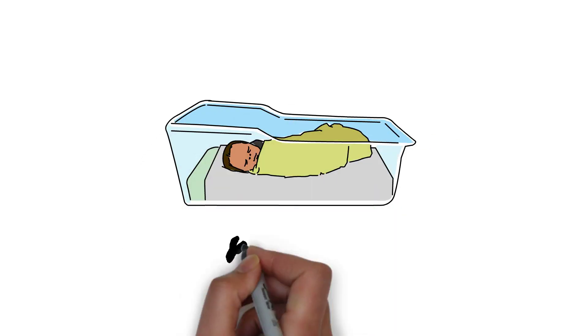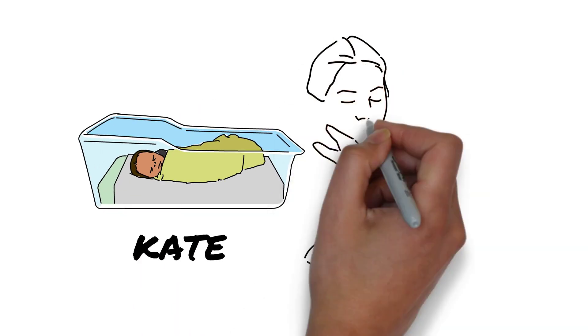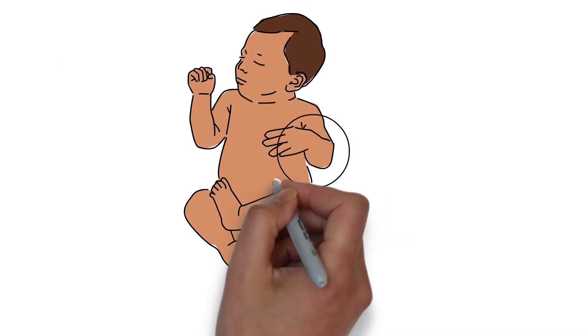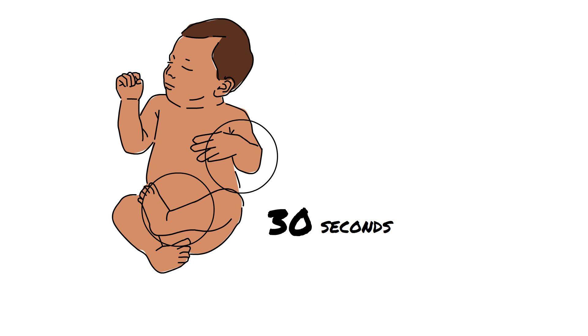This is Kate. Kate is one day old. A day after Kate was born, the nurse noticed twitching in her left arm and leg while she was awake. This lasted almost 30 seconds.